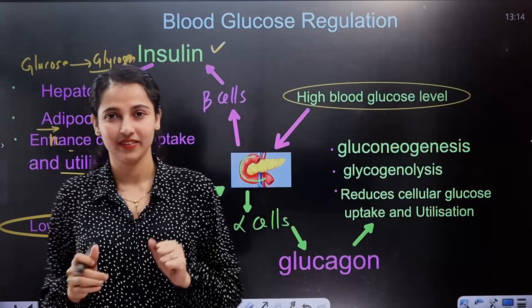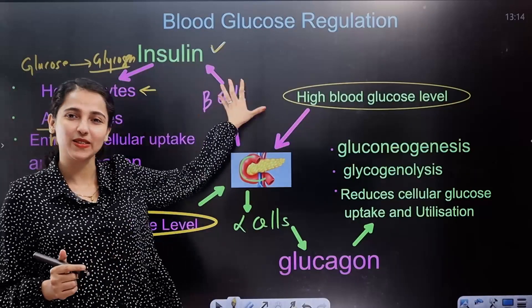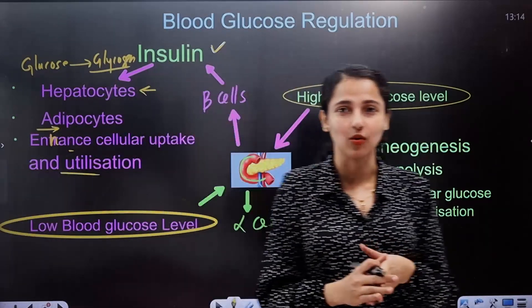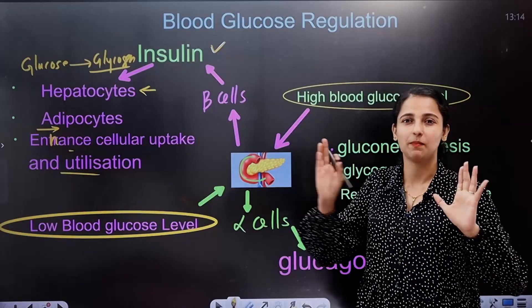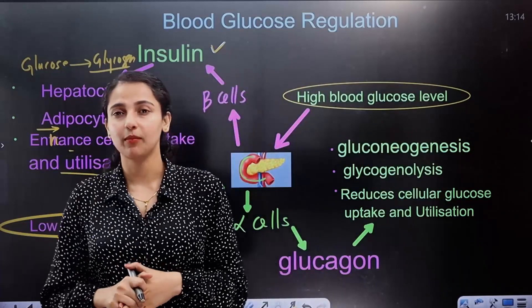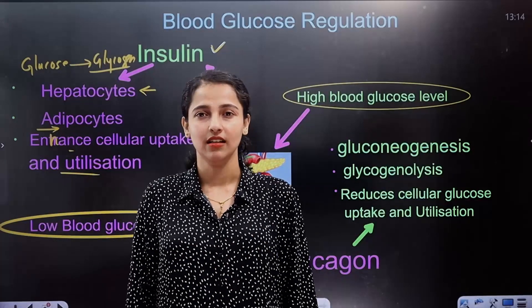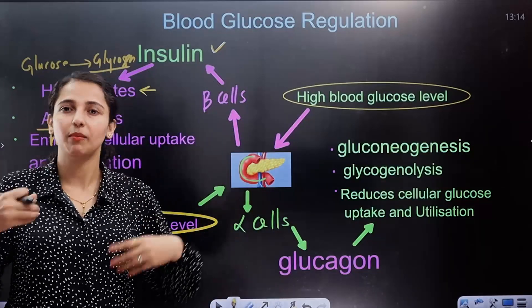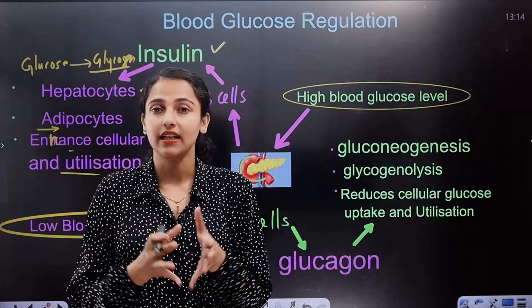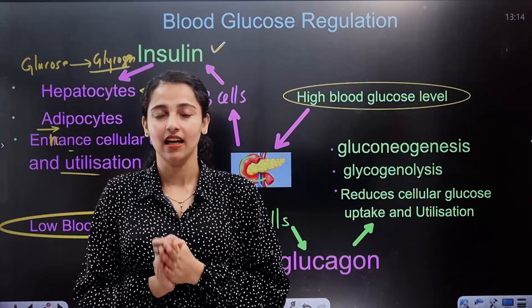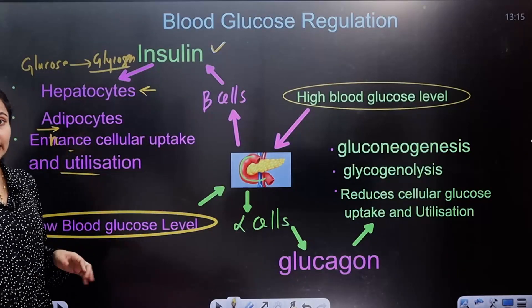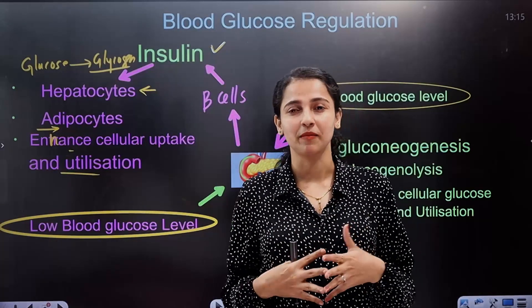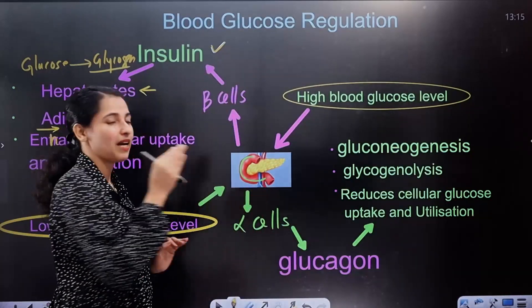Through these actions, insulin reduces glucose in the blood, restoring normal blood glucose levels. When blood glucose is too low, the pancreas responds differently — this condition stimulates the alpha cells in the pancreas.